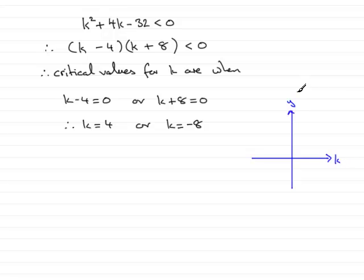So I'm going to then sketch this graph, the graph of y equals k squared plus 4k minus 32. If I do that, the critical values, k equals 4 and minus 8, would be along here. Let's say that this is negative 8 and this is 4.